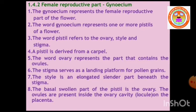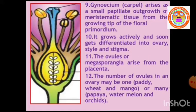The stigma serves as a landing platform for pollen grains. The style is an elongated slender part beneath the stigma. The basal swollen part of the pistil is the ovary, which you can see in this picture. Ovules are present inside the ovary cavity called a locule, on the placenta. Gynoecium or carpel arises as a small papillate outgrowth of meristematic tissue from the growing tip of the floral primordium.